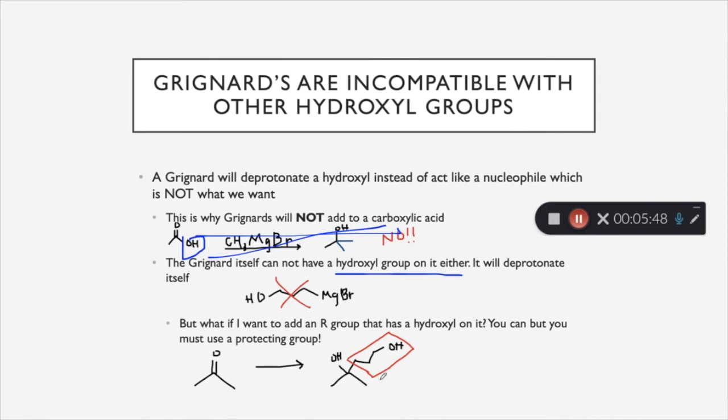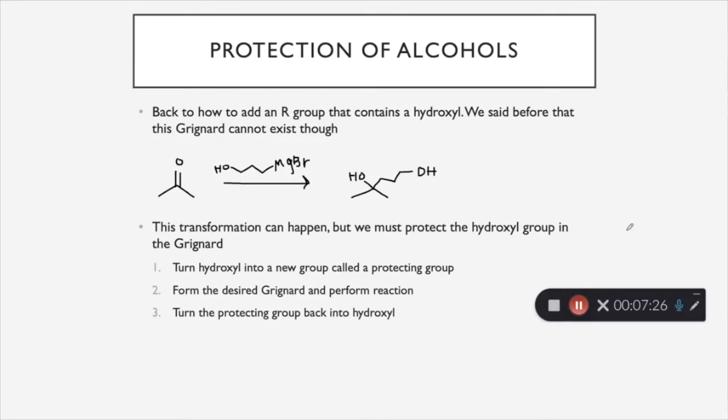So what if I wanted to make this transformation right here happen? So we have our ketone, and then if we were to add a Grignard to it, that oxygen that was the oxygen on the ketone becomes a hydroxyl group. And then we add one, two, three carbons. And off of that last carbon, we have a hydroxyl group. So is this possible? It is possible, but we must use something called a protecting group. So back to how to add an R group that contains a hydroxyl group. We said before that this Grignard right here cannot exist. But this is really the only way we know that we can produce this product. So how can we make this happen with a Grignard that is chemically incompatible? You have to take a few steps.